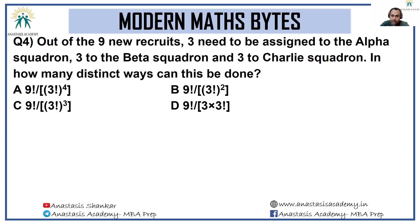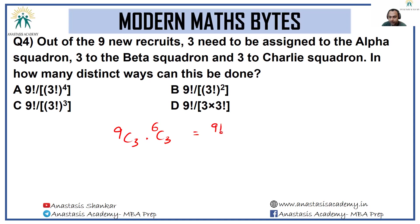Next question: out of nine recruits, three need to be assigned to Alpha squadron, three to Beta squadron, and three to Charlie squadron. In how many distinct ways can this be done? Out of nine, first select three going to Alpha — 9C3 — then from the remaining six, select three going to Beta — 6C3 — and the remaining three go to Charlie. Opening this up: 9! / (3! × 6!) × 6! / (3! × 3!), the 6! cancels, leaving 9! / (3!)^3. The answer is option C.